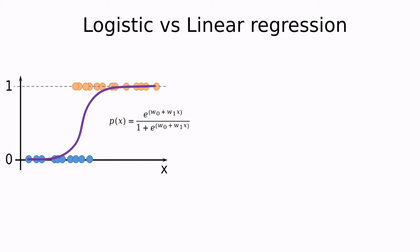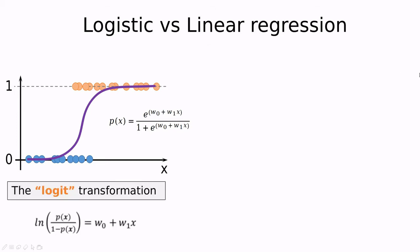Let's go back to logistic regression and compare it with traditional linear regression. We're going to define what's called the logit transformation, which is the logarithm of the odds. If you take the logarithm of the odds expression, it becomes a linear function of x. So we apply this transformation.